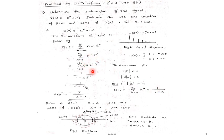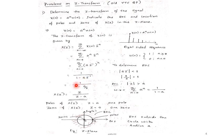To determine the ROC, the term A Z inverse must be less than 1 in absolute value. Rearranging, that gives absolute value of A by Z less than 1, or magnitude of Z greater than A. This is the ROC. Using the infinite series result, X(Z) equals 1 by 1 minus A Z inverse, which can be rewritten as 1 by 1 minus A by Z, or equivalently Z by Z minus A. So the Z-transform of A to the power N times U(N) is Z by Z minus A.